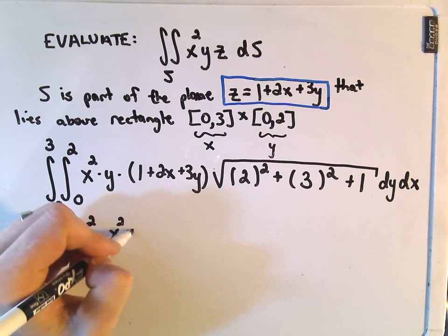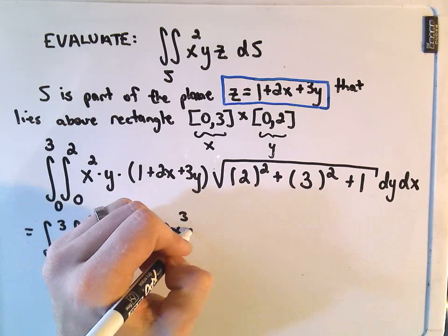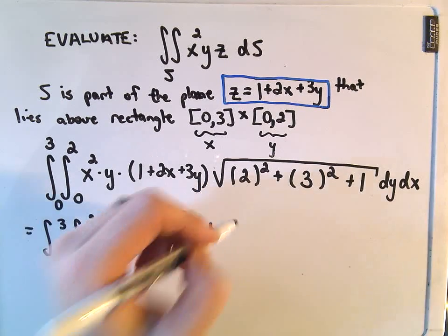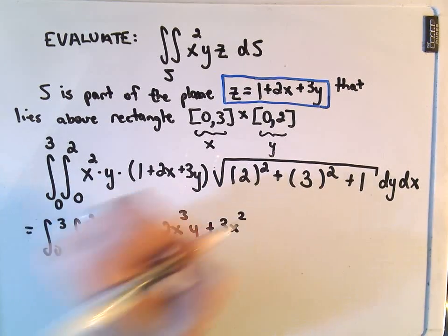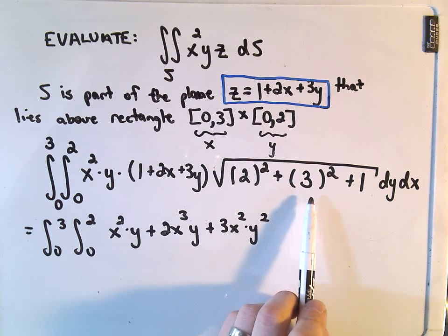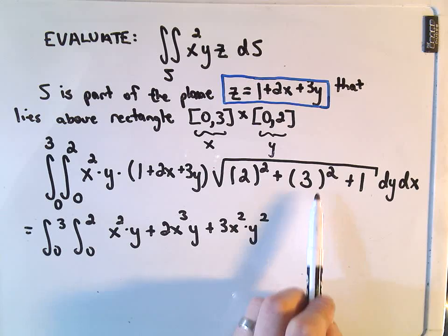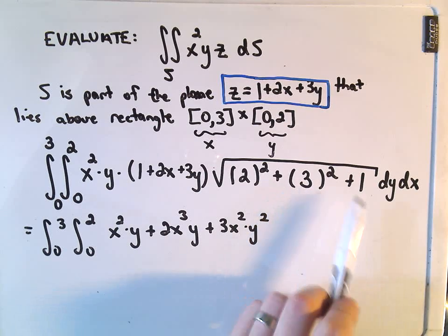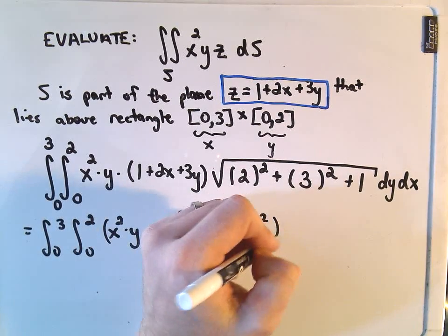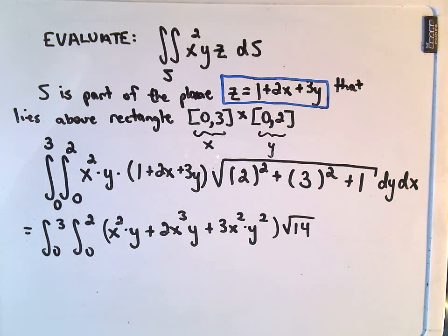I would go ahead and distribute this term out, so we would get x²y, then 2x³y, plus 3x²y². Under the square root, we have 2² which is 4, plus 3² which is 9, so 9 and 4 is 13, plus 1. We're getting the square root of 14. Too bad it wasn't some nicer numbers, but I think that looks okay.